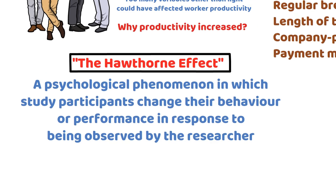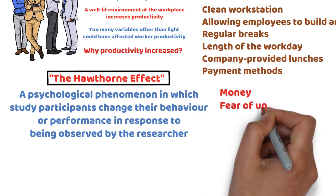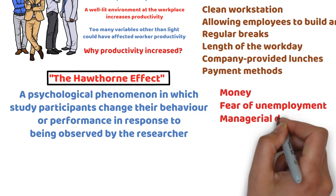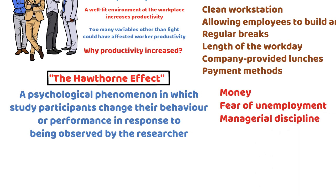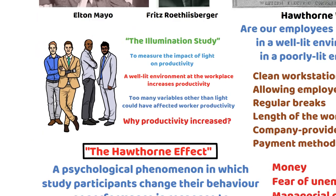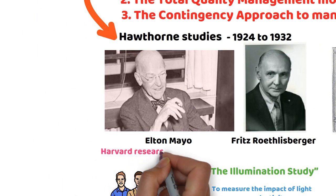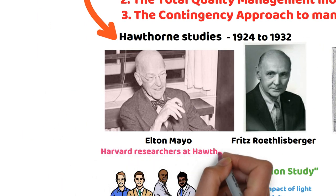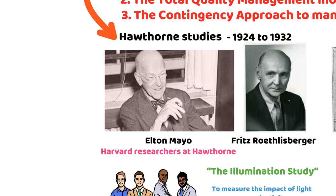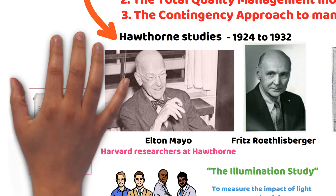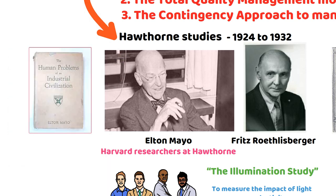Specifically, money, fear of unemployment, and managerial discipline were responsible for high output — and not supportive supervision. Mayo, who headed the Harvard researchers at Hawthorne, advised managers to attend to employees' emotional needs in his 1933 classic, The Human Problems of an Industrial Civilization.